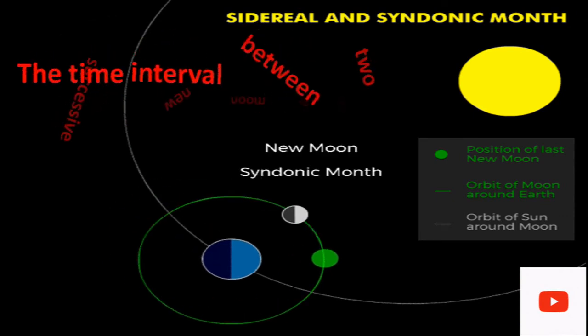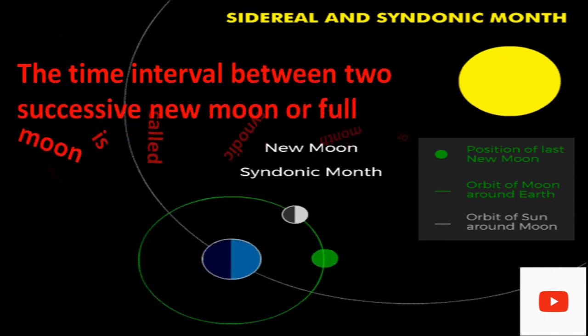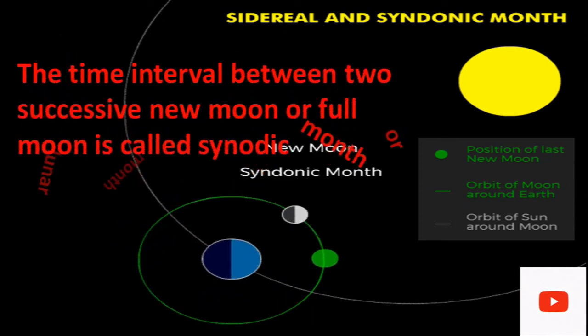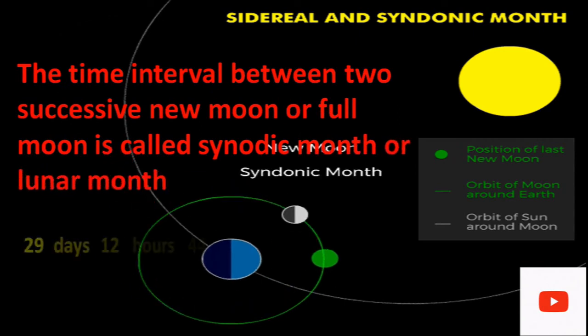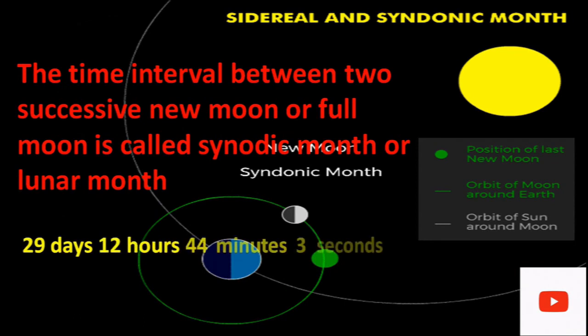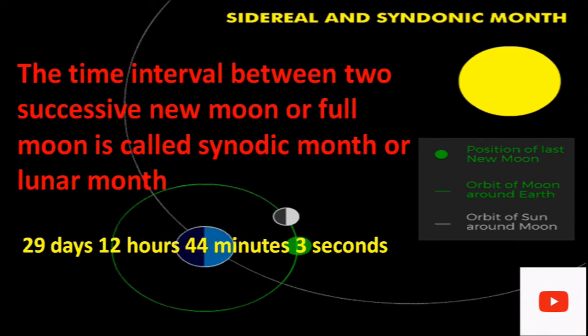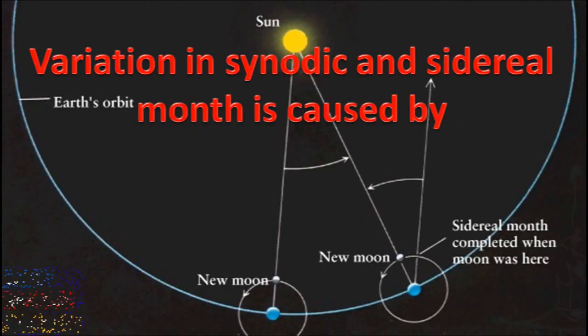The time interval between two successive new moons or full moons is called the synodic month or lunar month. The synodic month is slightly larger than that of the sidereal month. This variation in the synodic month is caused by the relative motion between the moon and the earth.